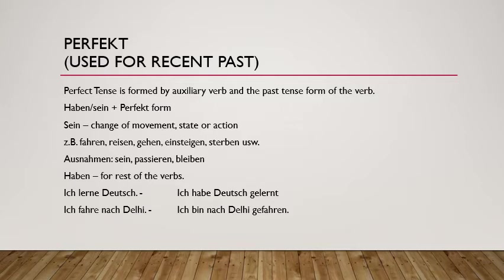However, there are exceptions. 'Sein' itself (to be), 'passieren' (to happen), and 'bleiben' (to stay) — these three verbs don't show any change in movement, state, or action, yet they always take 'sein' as an auxiliary verb. For all the rest of the verbs, 'haben' is used as the auxiliary verb.